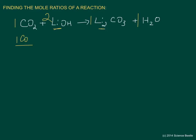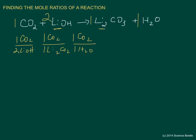Starting from carbon dioxide: one mole of CO₂ reacts with two moles of lithium hydroxide; one mole of CO₂ produces one mole of lithium carbonate; and one mole of CO₂ produces one mole of water. Those are the three mole ratios starting from carbon dioxide. Now we move on and begin with lithium hydroxide.